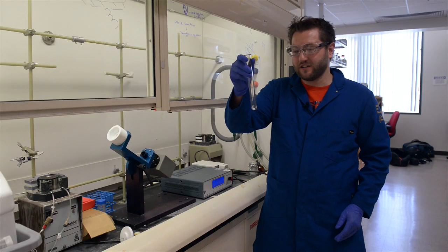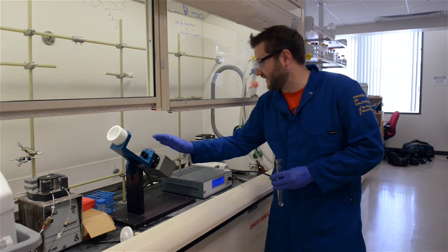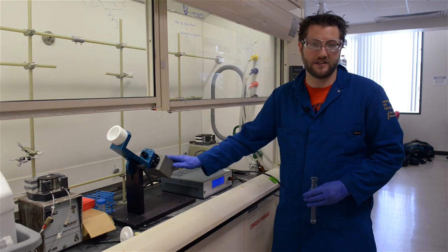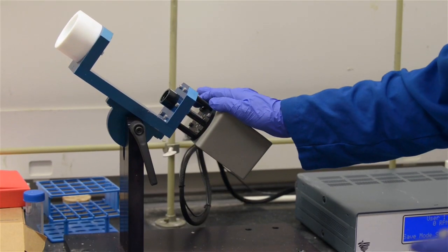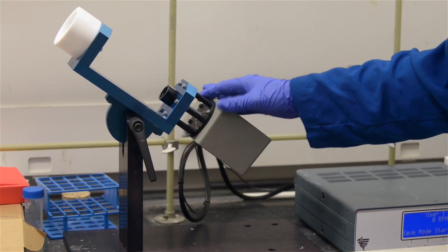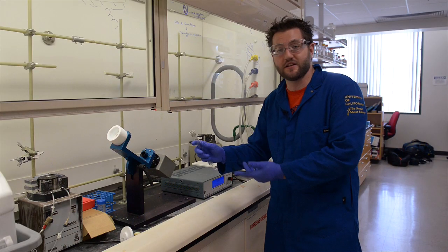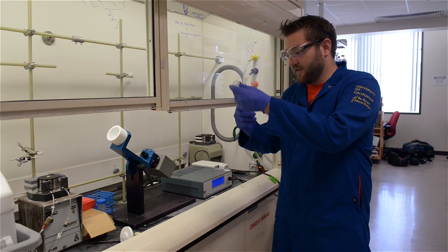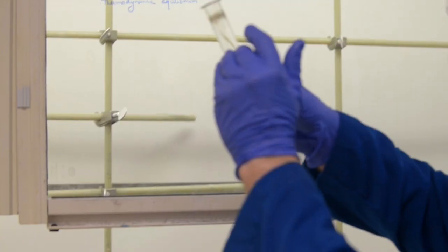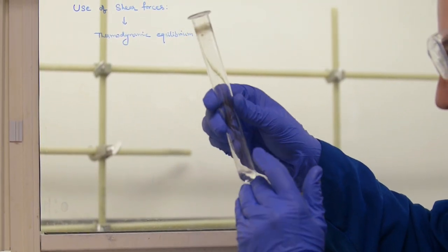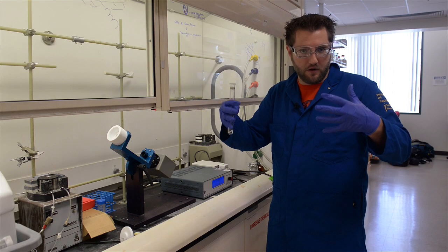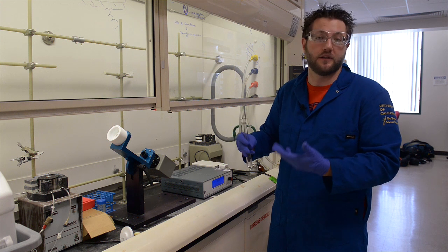So we now take our dissolved egg whites into this machine here. It's called the vortex fluid device. This machine was developed by our collaborators in Australia, Dr. Colin Raston at Flinders University. The way the instrument works is it spins at a certain degree and certain speed. The egg white creates this thin film, stretching out those proteins, giving them another chance to properly refold.